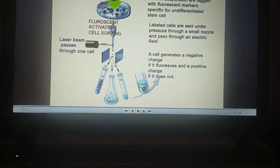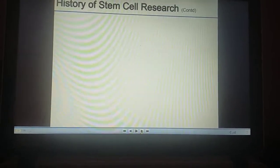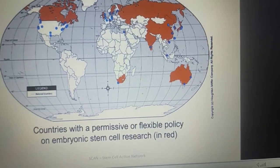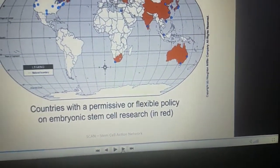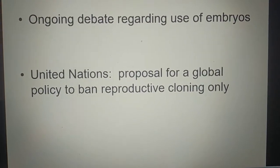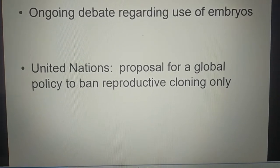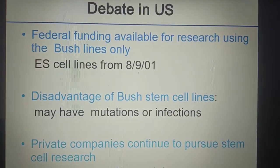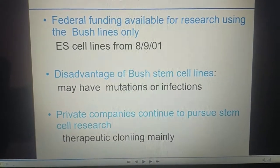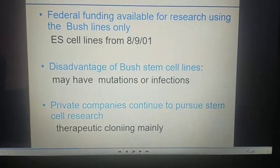Looking at the history of stem cell research: countries with permissive or flexible policies on embryonic stem cell research are shown in red. There is an ongoing debate regarding the use of embryos. The United Nations proposed a global policy to ban reproductive cloning only. In the US, federal funding was available for research using only the Bush stem cell lines established from 08/09/01.